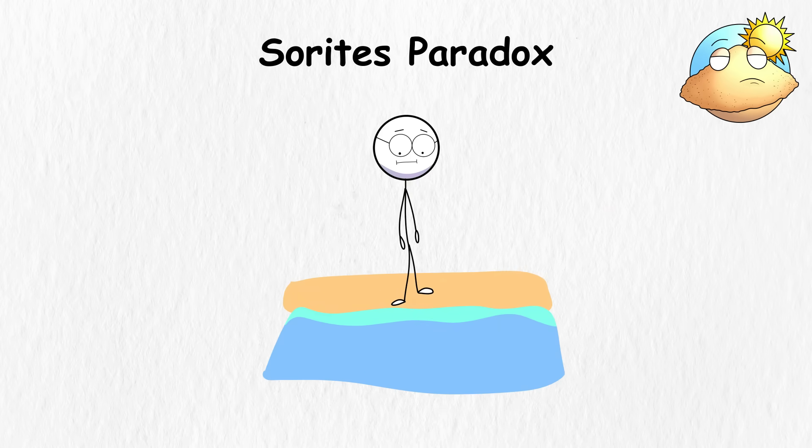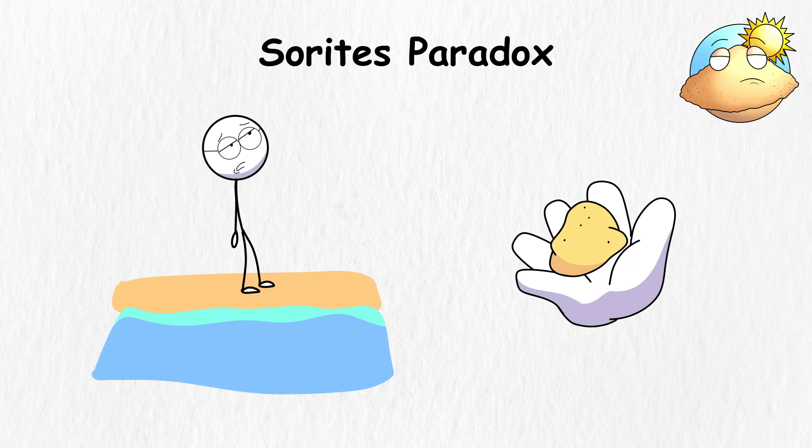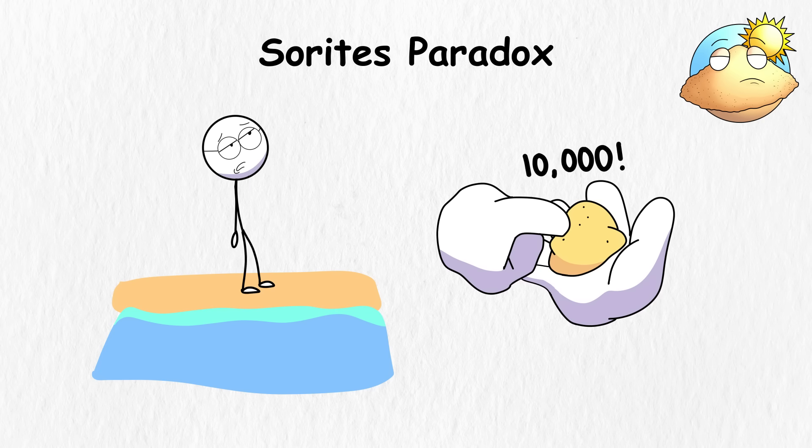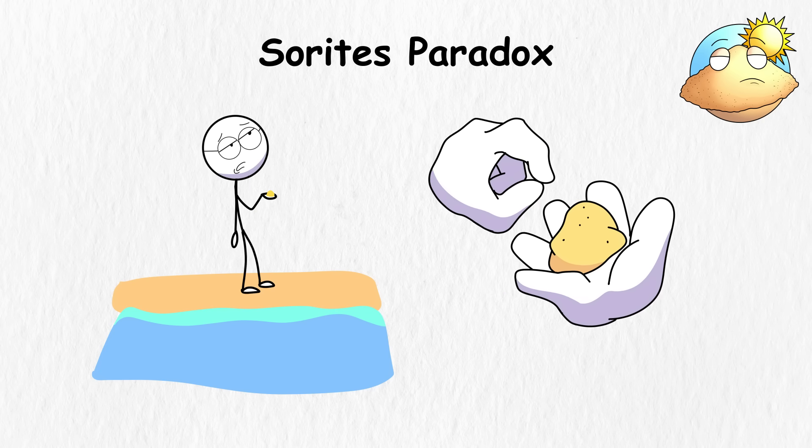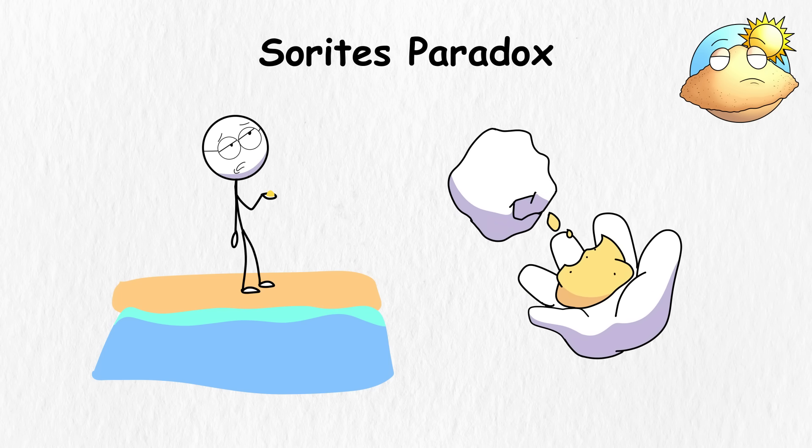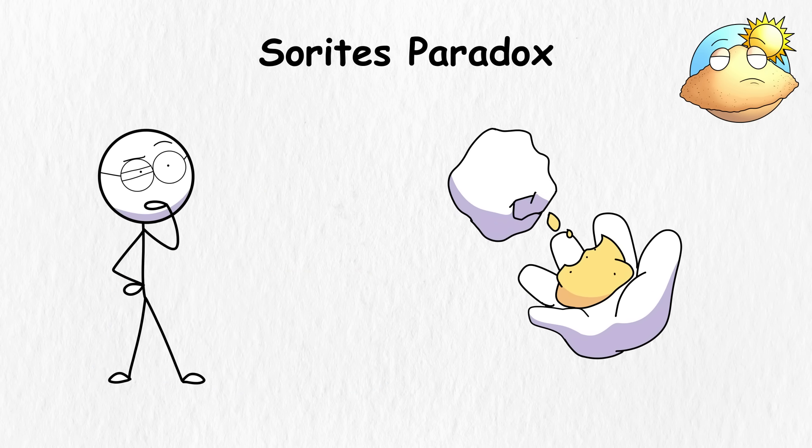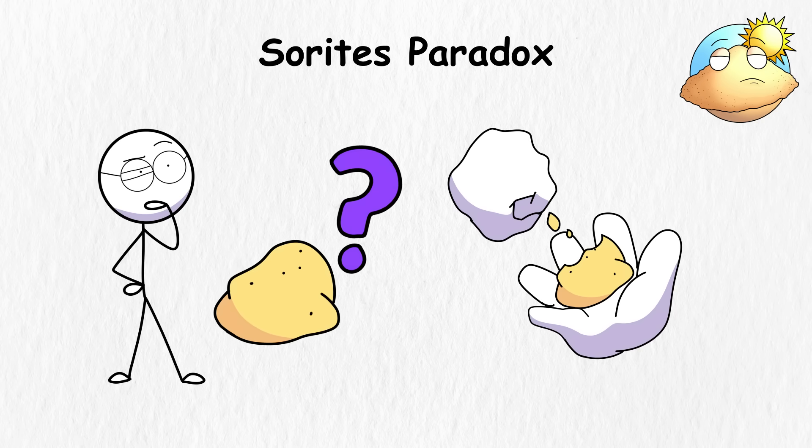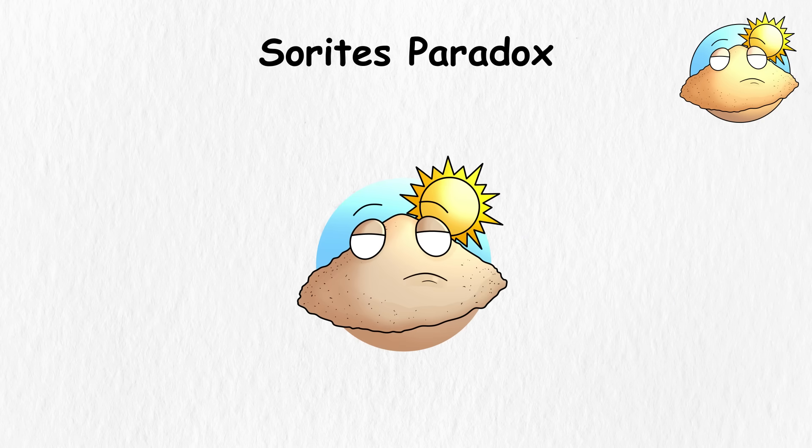Sorites Paradox. You're on the beach one day and a wave of boredom hits you. You decided to gather some sand and started counting every grain. You found that there were precisely 10,000 grains in that heap. Then you got bored again and took one grain away. It's still a heap because having 9,999 grains doesn't change it much. But when you start taking more grains, the term heap now becomes vague, because you don't know when the heap stops becoming a heap. That's the sorites paradox in a sandbox.